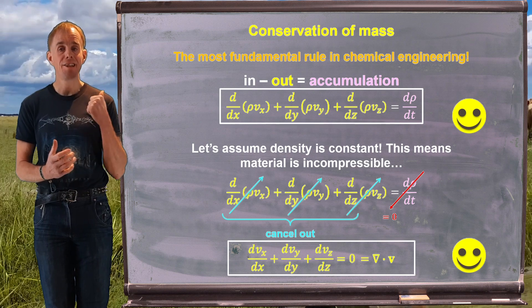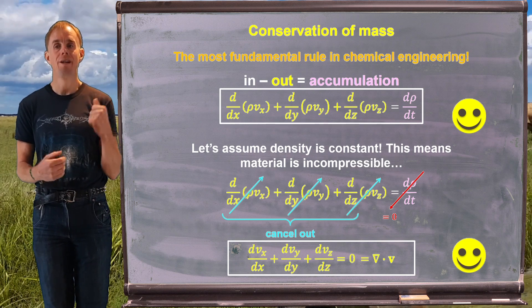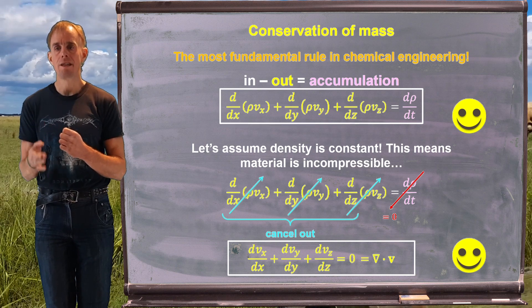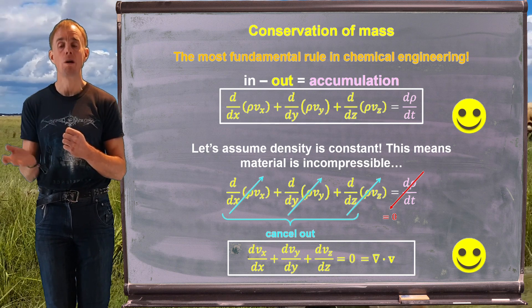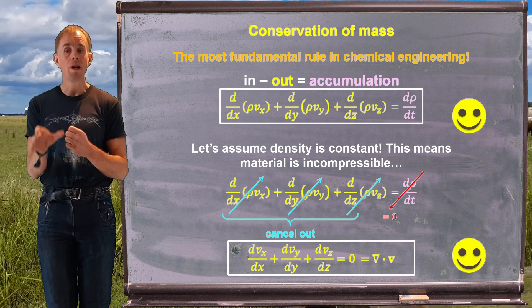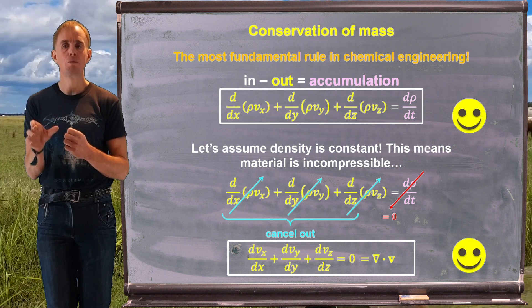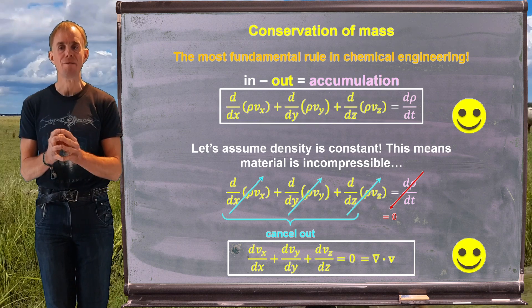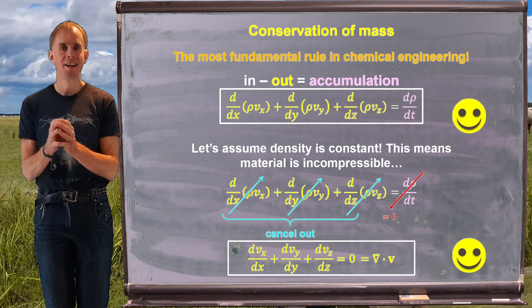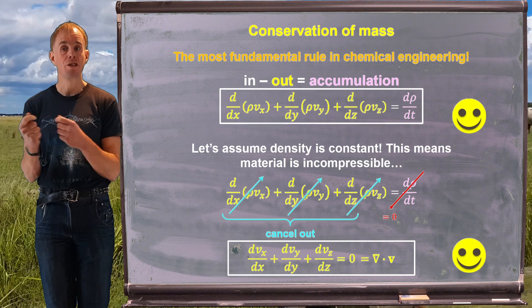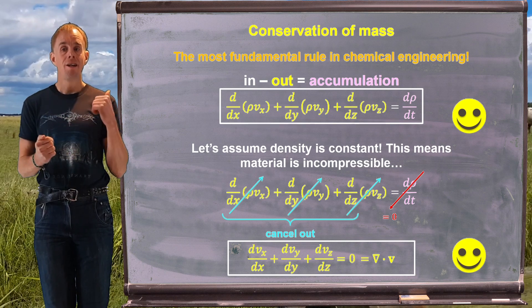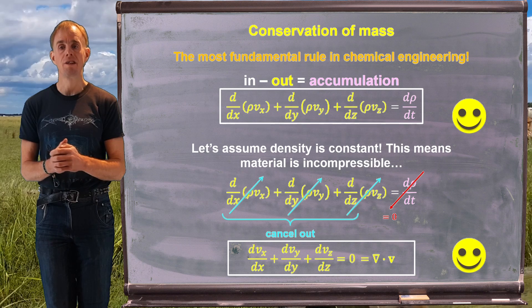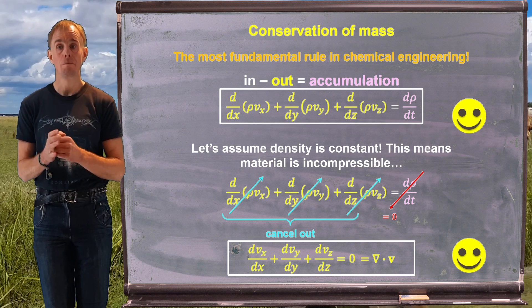And what we're left with is this expression at the bottom of the blackboard: dvx by dx plus dvy by dy plus dvz by dz is going to equal zero. Which if you remember back to lesson two is equal to del dot v in Cartesian coordinates. This is our equation of continuity. This is a really important equation in fluid mechanics and it allows us to relate together changes in velocity in one direction to changes in velocity in another direction. This equation is also fundamental in deriving one of the equations of motion we're going to see later on in this lesson, the Navier-Stokes equations, and we'll visit that in a few parts time.